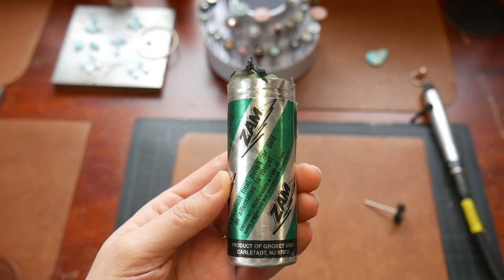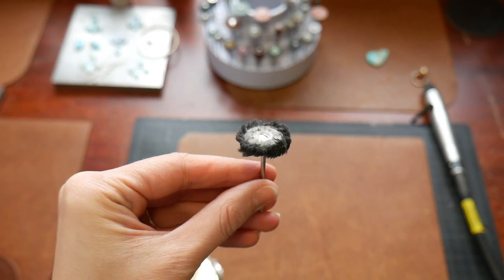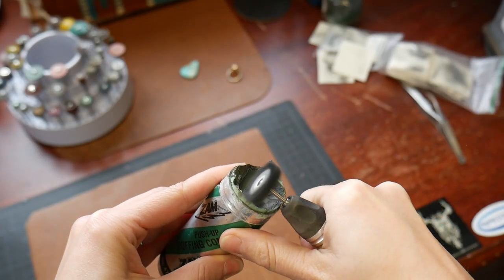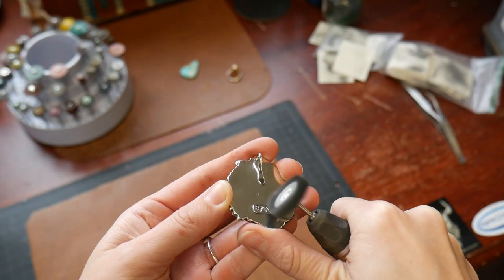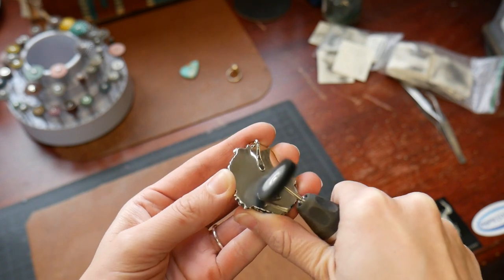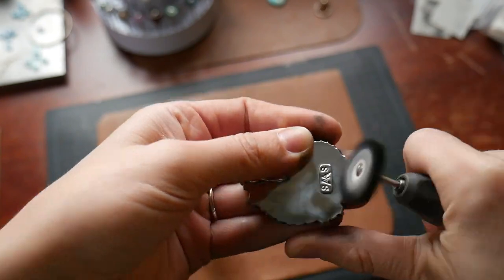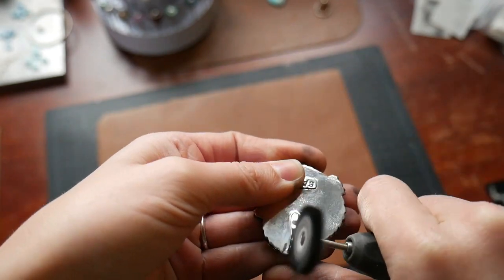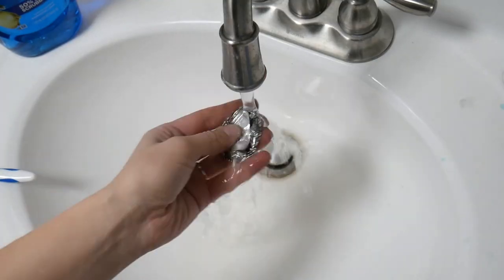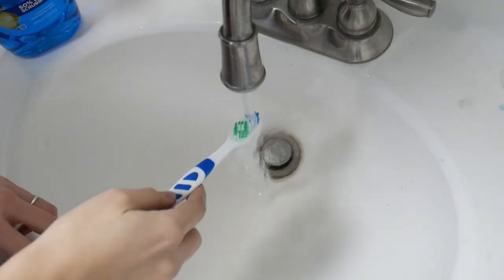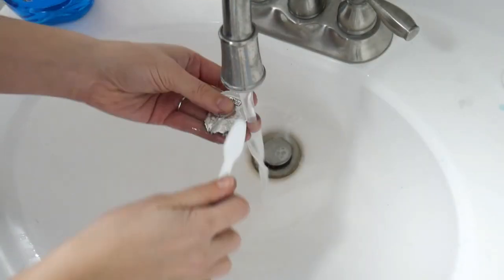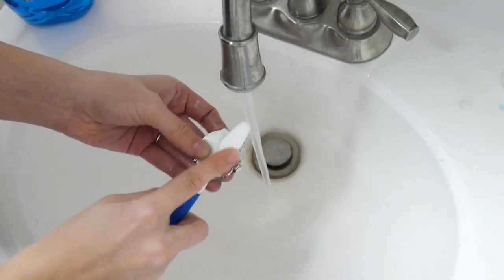Now I'm going to be using the Zam Polishing Compound along with the Muslin Wheel to give my piece a nice high shine. Now to remove any remaining polishing compound on my piece, I'm going to be using dish soap along with a soft bristle toothbrush, and I'm just going to gently scrub my piece under warm water to remove any remaining compound.